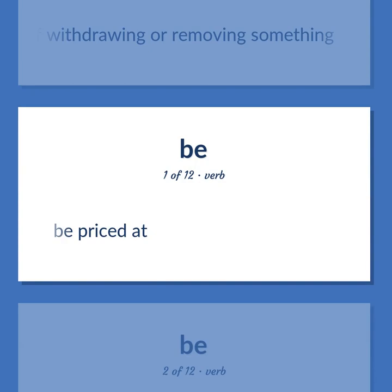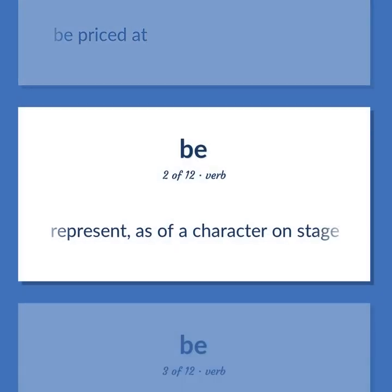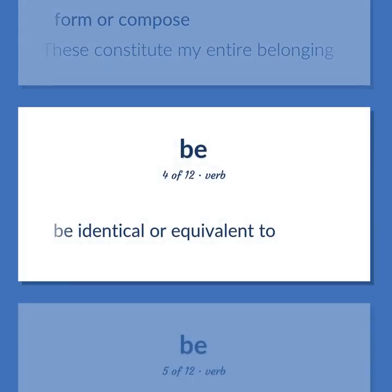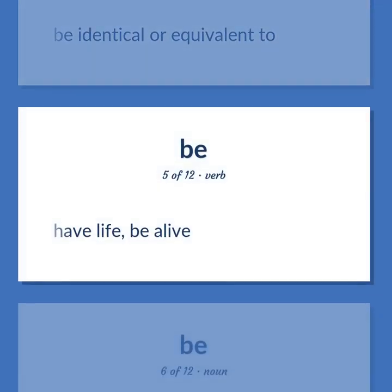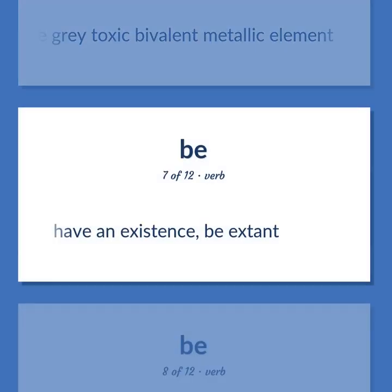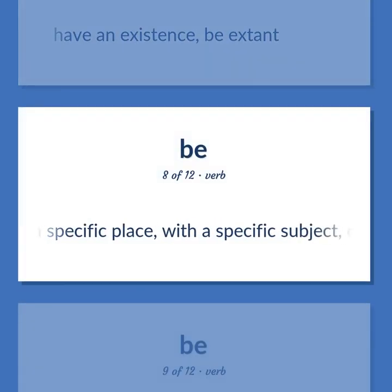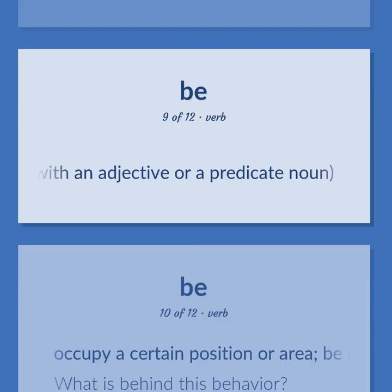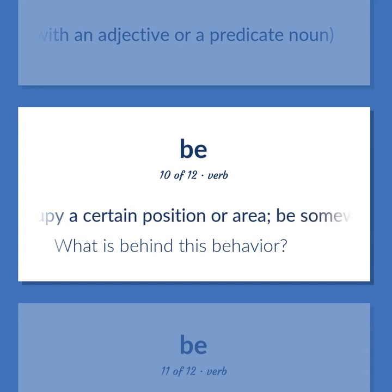Be: To be priced at. To represent, as of a character on stage. To form or compose — these constitute my entire belongings. To be identical or equivalent to. To have life; be alive. A light strong brittle gray toxic bivalent metallic element. To have an existence; be extant. To work in a specific place, with a specific subject, or in a specific function. To have the quality of being; copula, used with an adjective or a predicate noun.